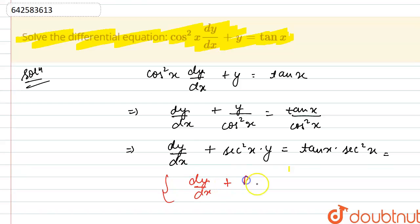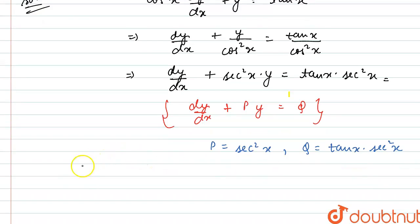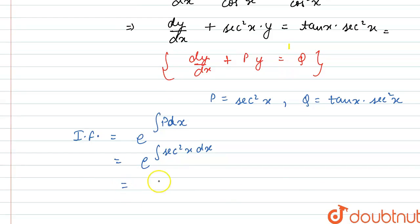This is a linear differential equation of the form dy/dx + Py = Q. Comparing, we get P = sec²x and Q = tan x · sec²x. For solving such a linear differential equation, we first find the integrating factor, which equals e raised to the power of the integral of P dx — that is, the integral of sec²x dx. Since the integral of sec²x dx is tan x, the integrating factor is e^(tan x).